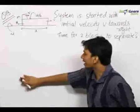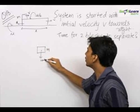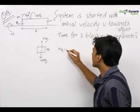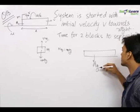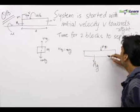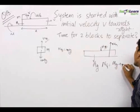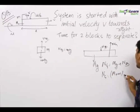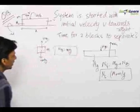Let us find out the normal reaction between the two surfaces first. The upper block of mass m experiences mg downward and a normal reaction Nb upward, so Nb equals mg. For the lower block of mass M, it experiences Mg downward, Nb downward from the upper block, and a normal reaction Ng upward from the ground. Therefore, Ng equals Mg plus Nb, which gives Ng equal to (M plus m)g. We will use these two normal reactions to find frictional forces.